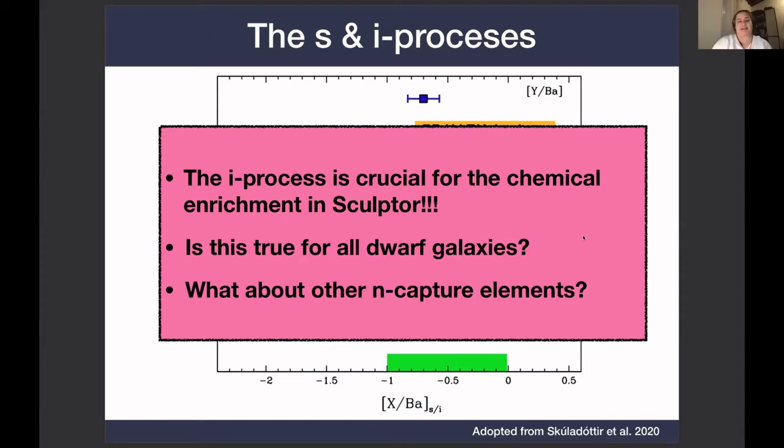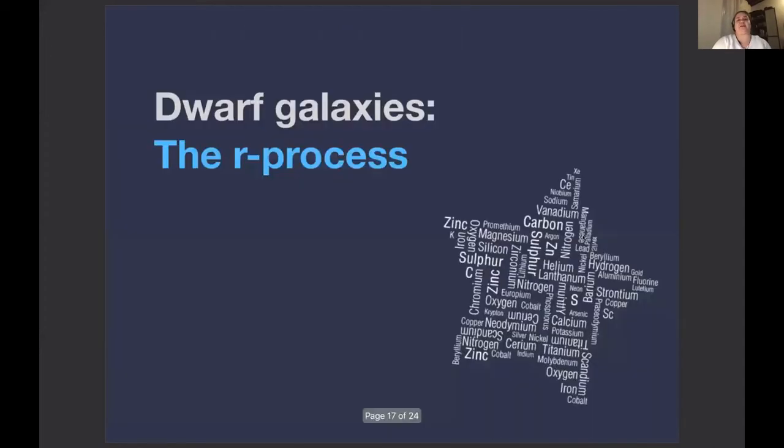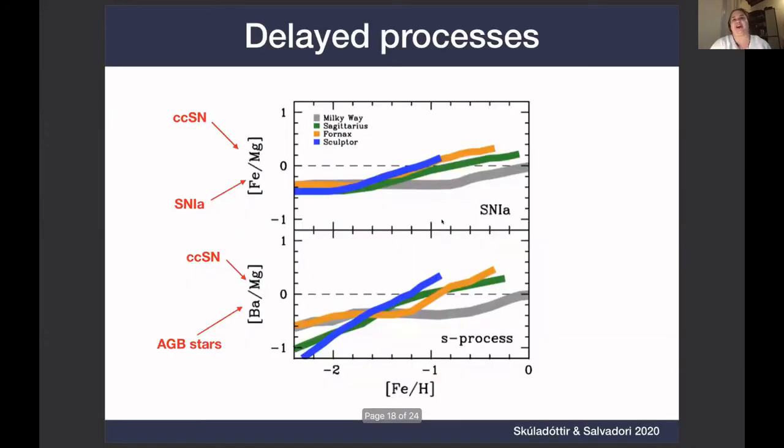So now finally, I'm going to spend a few minutes on the r-process. And first, before I go any further, I want to show you what delayed processes look like in the context of chemical evolution. Here we have two examples, supernova type 1a and the s-process. Both of these processes involve evolution of low-mass stars, and therefore have long timescales compared to core-collapse supernova, which creates nearly all the magnesium in the universe.